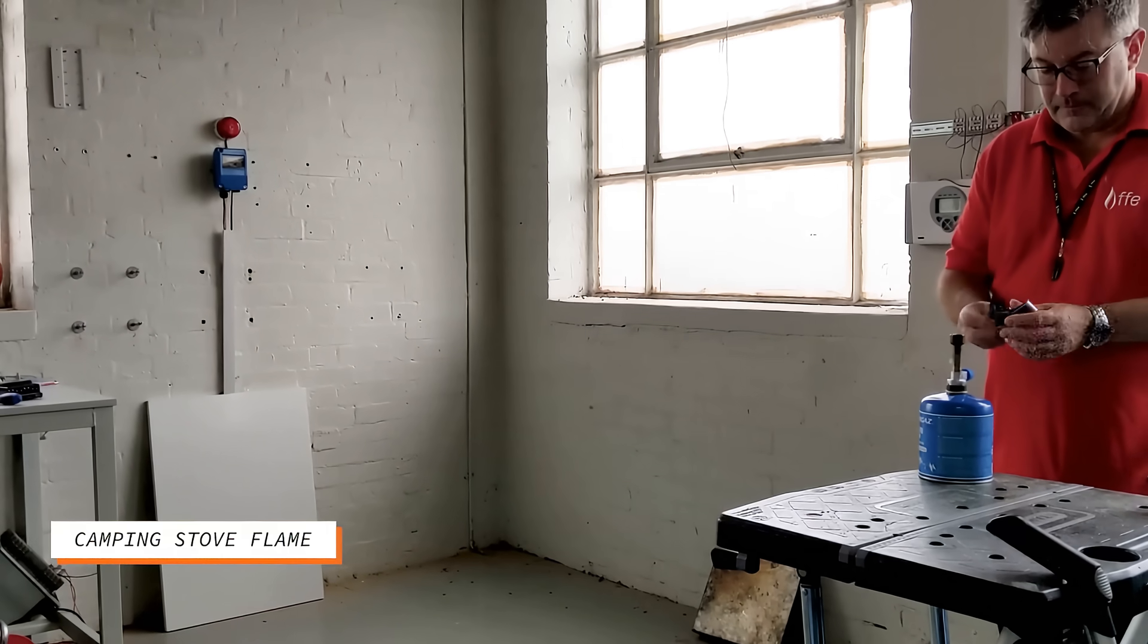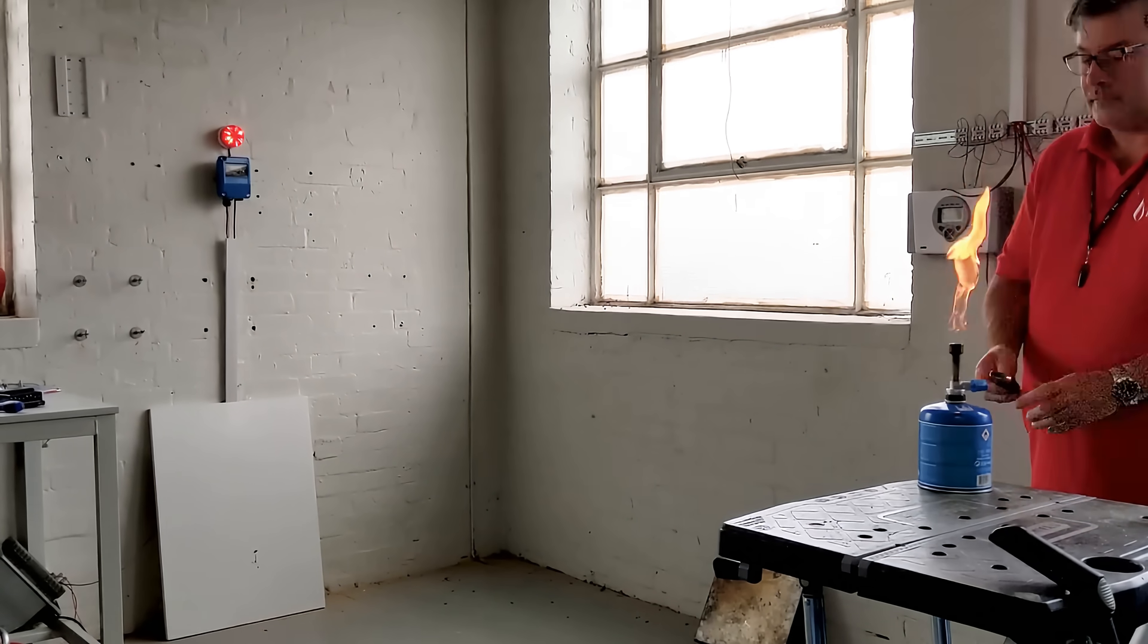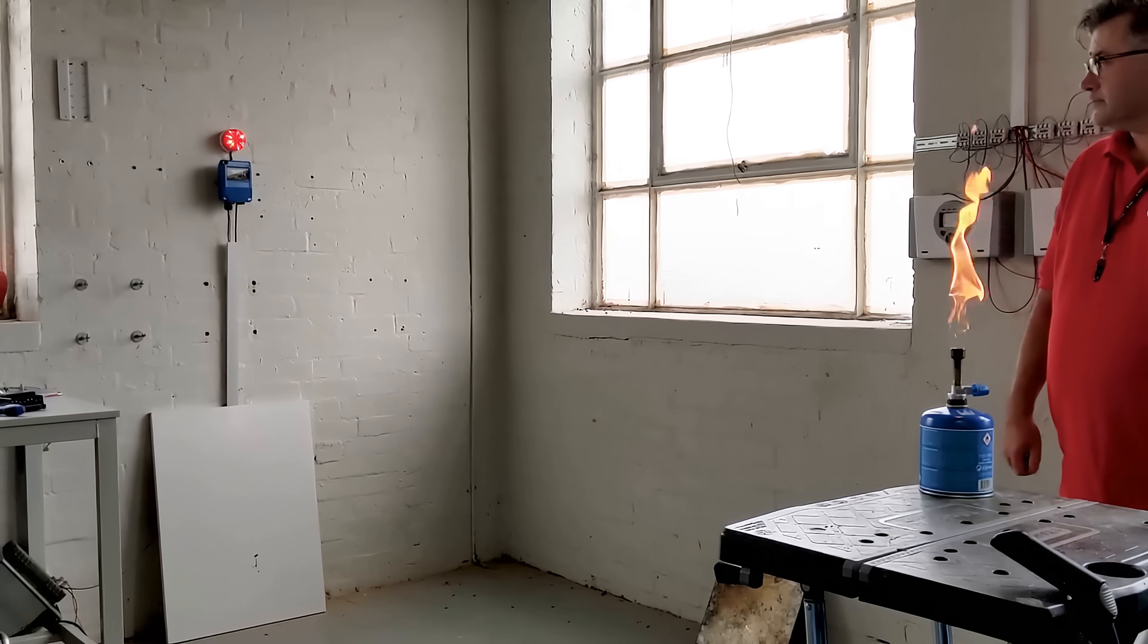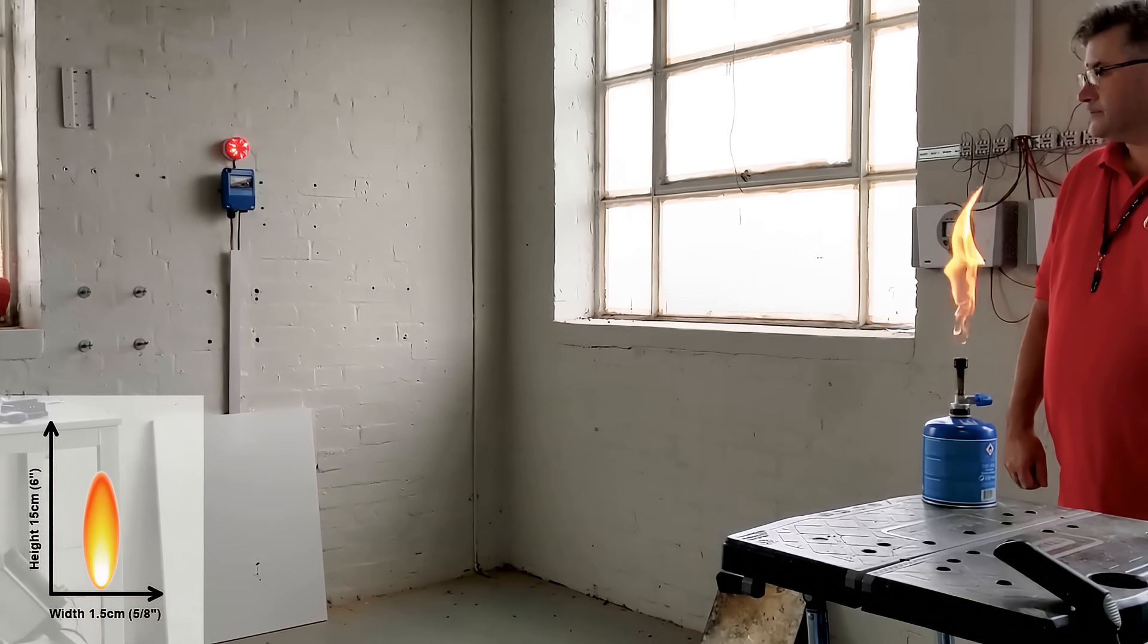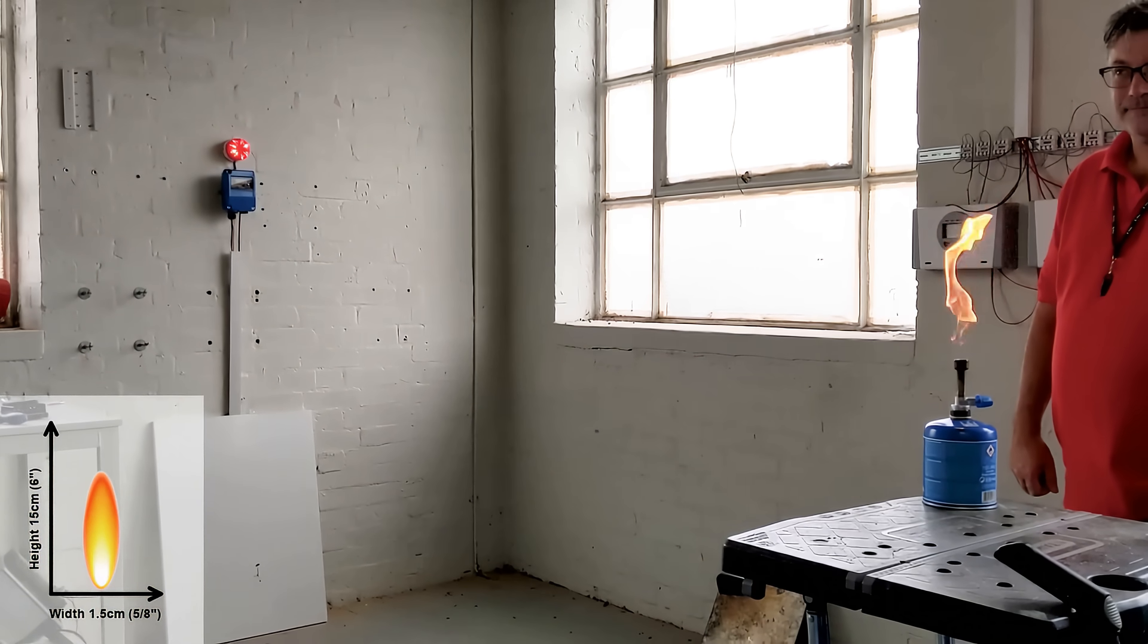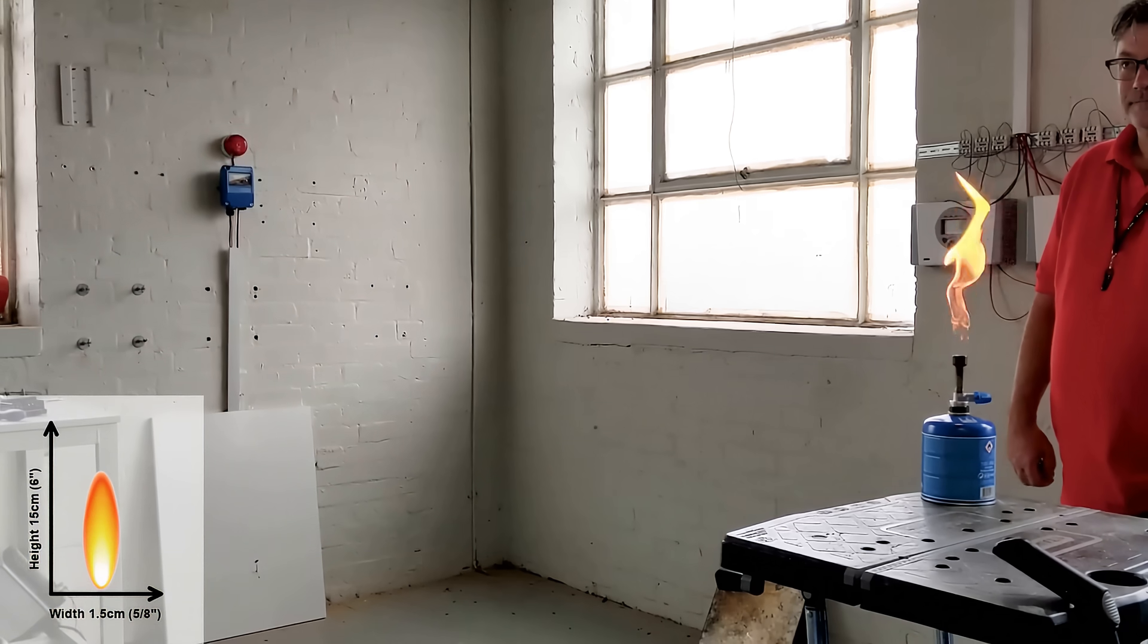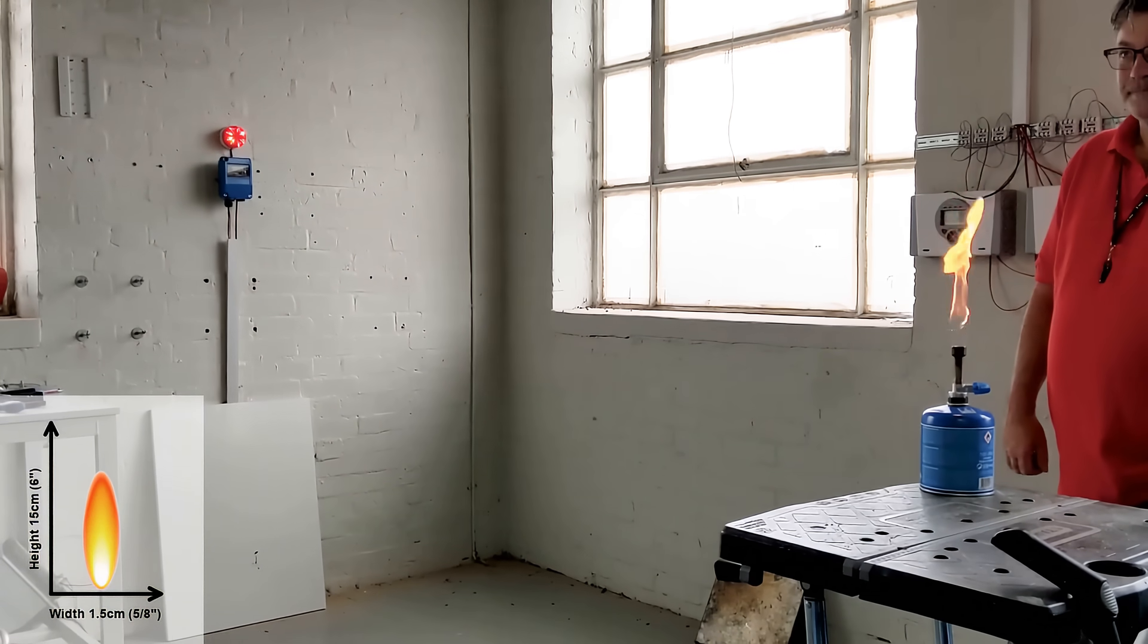Camping stove flame. A small gas camping stove may be a more convenient and portable alternative to pan fire testing. A typical camping stove can generate a flame of approximately 15 cm or 6 inches in height with a width of 1.5 cm or 0.8 of an inch.